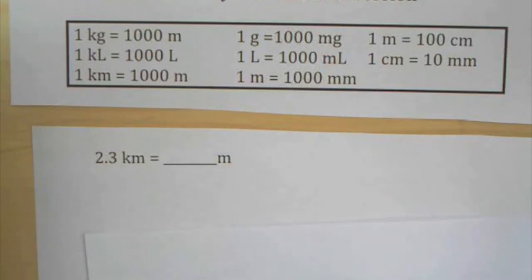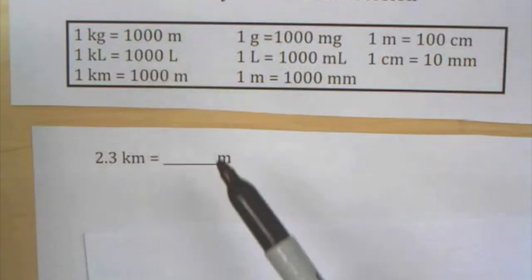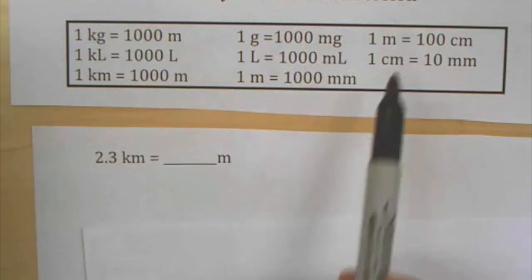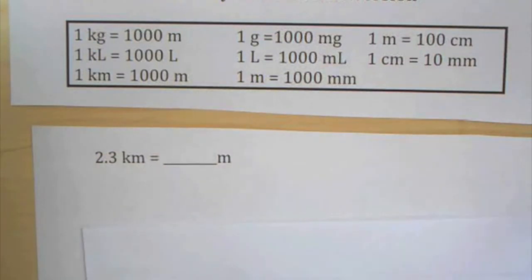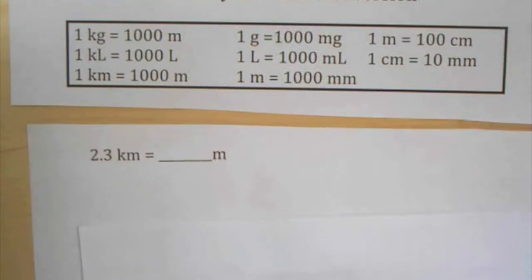This video is about dimensional analysis — how to convert from one unit to another. Dimensions are things like length and width, so we're looking at units to help us set up a problem. These are some units I would expect you to memorize by heart. If you don't know them, it would be great to take out a pen and paper, maybe in your science journal, to write them down so you have a place to refer to them.